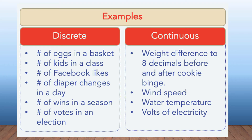With discrete data, we could be looking at things like the number of eggs, the number of kids in a class, the number of Facebook likes, or the number of diaper changes in a day. Whereas continuous data would be things like weight difference to eight decimals before and after eating cookies, wind speed, water temperature, or volts of electricity. I hope this shows you the difference between those two.